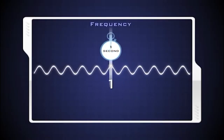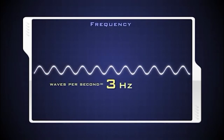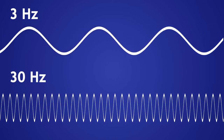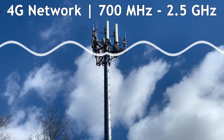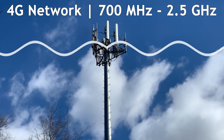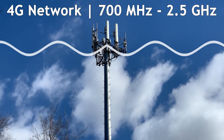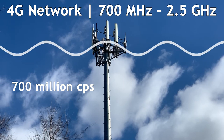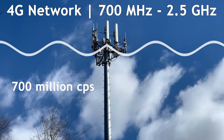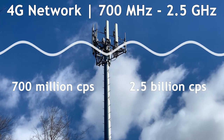How often an electromagnetic wave cycles is known as its frequency, denoted by the SI unit Hertz. A 3Hz electromagnetic wave cycles three times per second, whereas a 30Hz electromagnetic wave cycles 30 times per second. For the 4G cellular network operating at 700MHz to 2.5GHz, these electromagnetic waves are cycling 700 million times to 2.5 billion times per second.